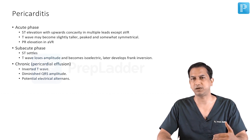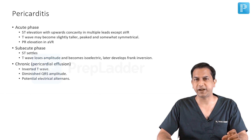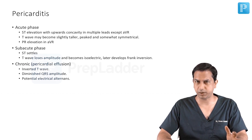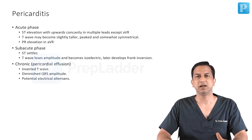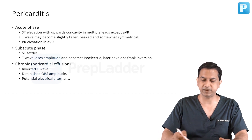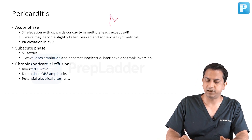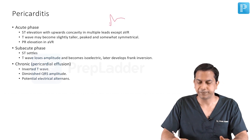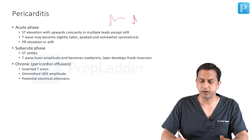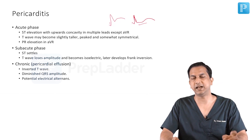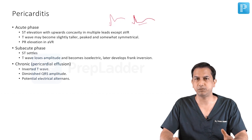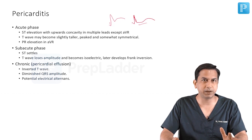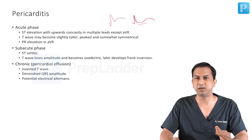It has an acute phase, subacute phase, and chronic phase. In the acute phase the ECG may mimic ST elevation MI but there are differences. Usually in ST elevation MI the ST elevation has an upward convexity, but in pericarditis the ST elevation will be concave upwards. Another difference is that this ST elevation with concavity upwards will be present in multiple leads and will not follow the regional blood supply.